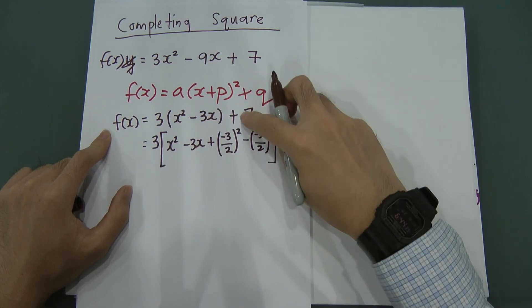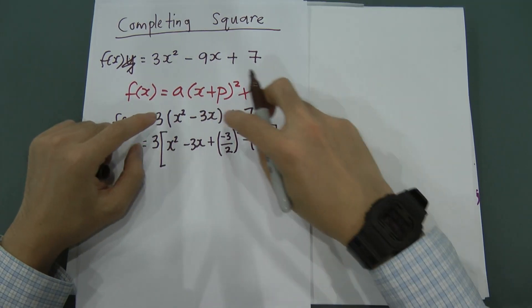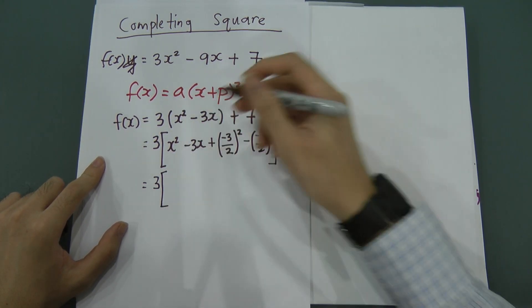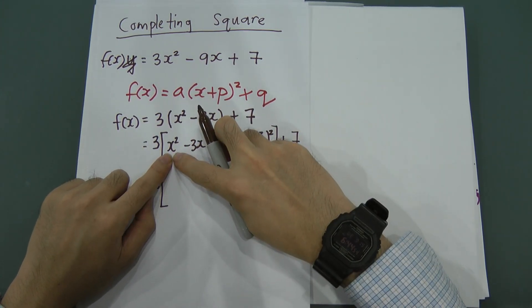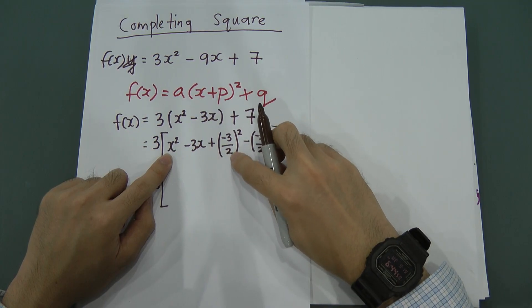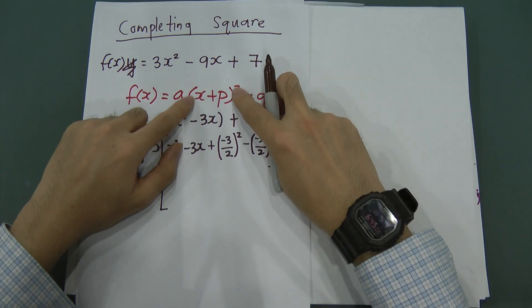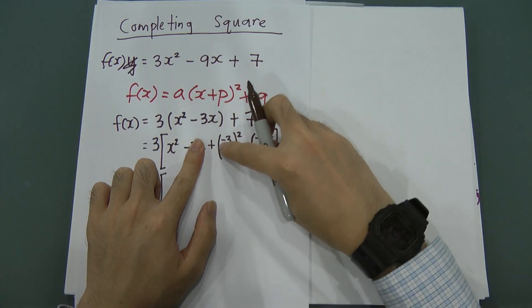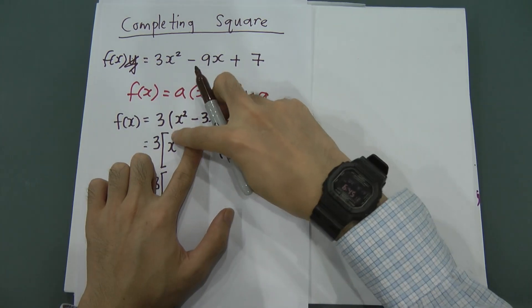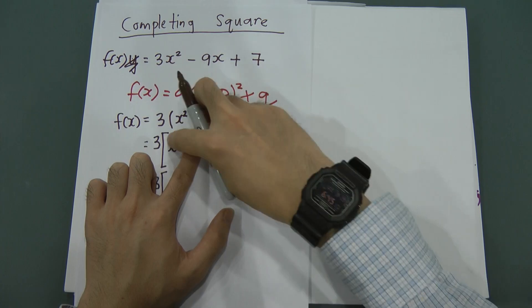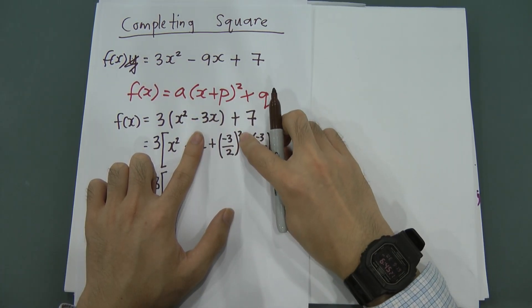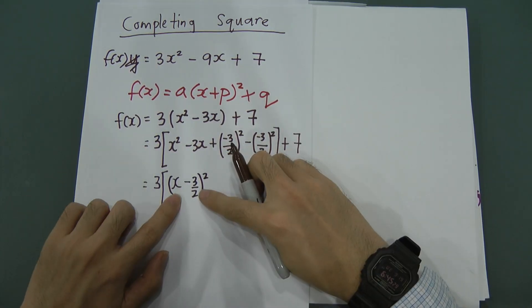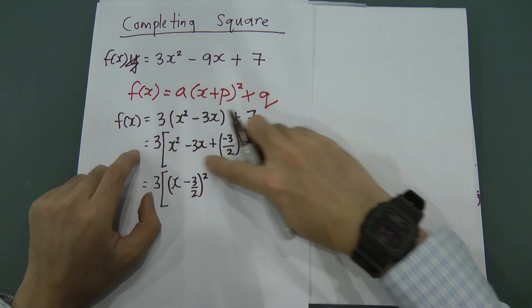The +7 stays outside the bracket. Now, x² - 3x + (-3/2)² can be combined into a perfect square. To combine, you ignore the middle term and take (x - 3/2)² — because both x and (-3/2) are squared. Expanding this bracket gives back the same expression.